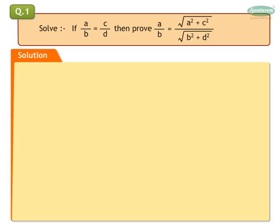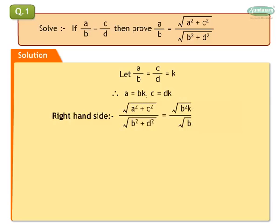We assume each ratio to be equal to K. That is, A upon B is equal to C upon D is equal to K. We then express A in terms of B and K — that is, A is equal to BK — and C in terms of D and K — that is, C is equal to DK. We now take the right hand side and substitute A with BK and C with DK.